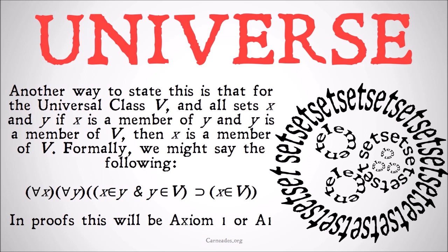Another way to say this is: for the universal class V, for all sets X and Y, if X is a member of Y and Y is a member of V, then X is a member of V. Formally: for all X and all Y, X ∈ Y and Y ∈ V implies X ∈ V. In proofs this will be Axiom 1, or just A1. If we get outside set theory we might say 'A1 set theory' to be clear, but within set theory we can call it Axiom 1 or just A1.